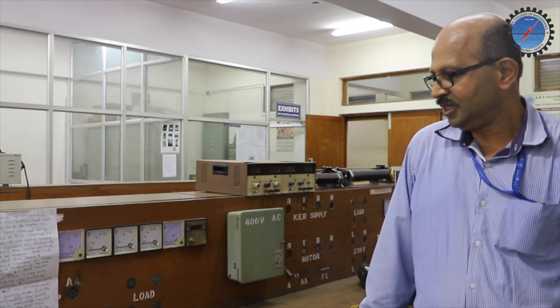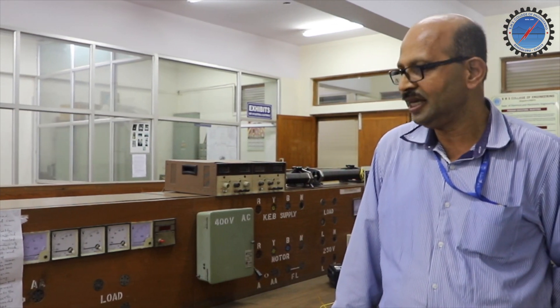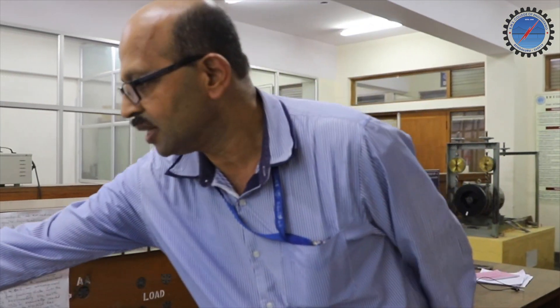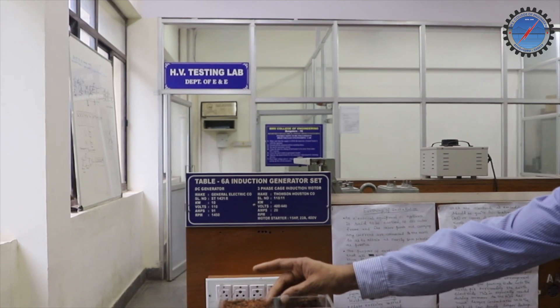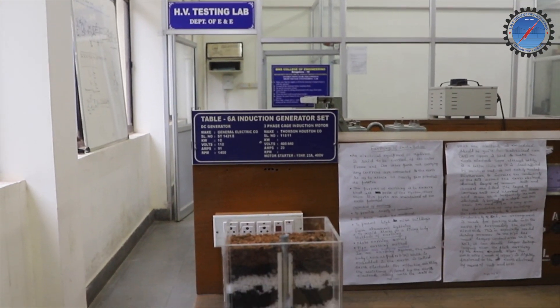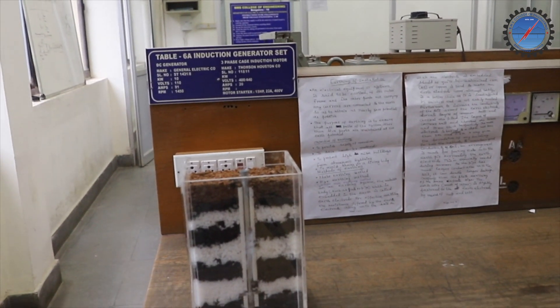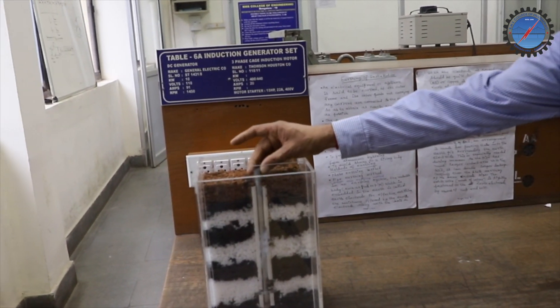The important terminology which is used in the earthing scheme is the earthing electrode. The material used for the earth electrode may be a GI pipe or it may be taken as copper material.